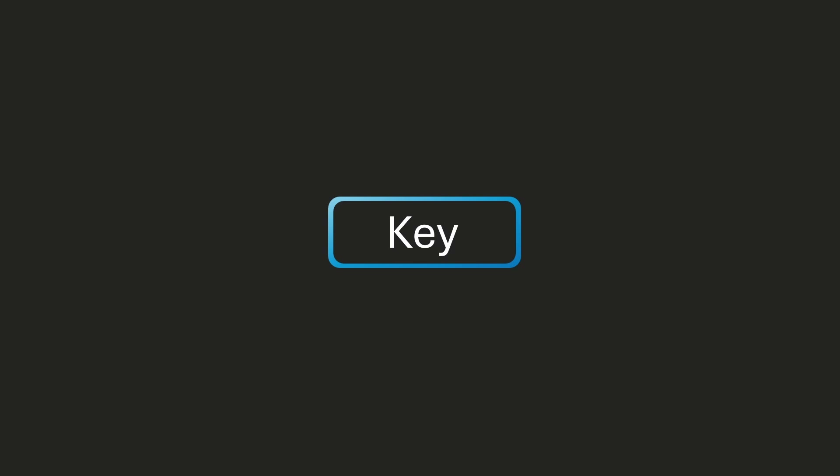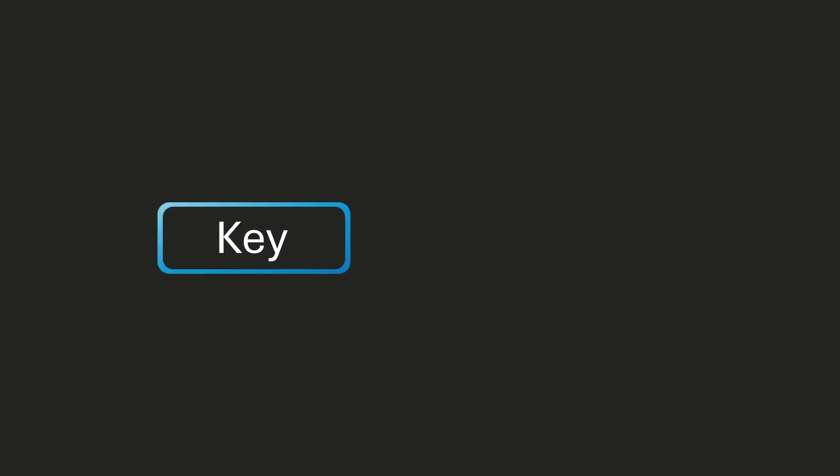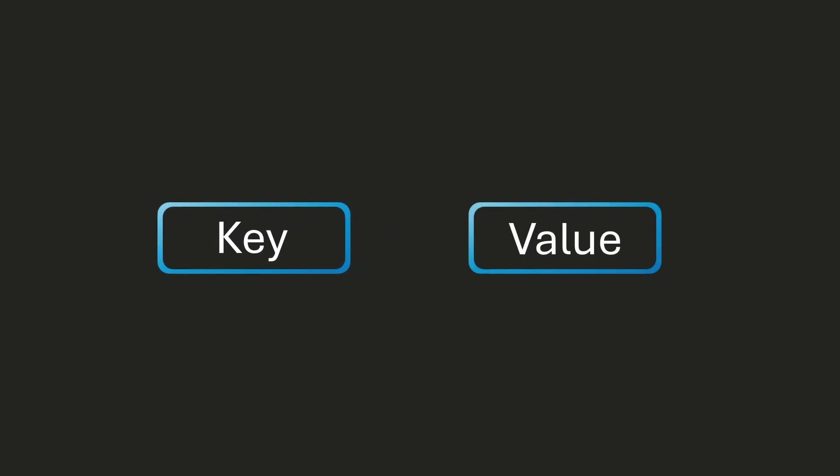A dictionary starts off with a key. A key can be any sort of value — for example it could be a string, a number, a float — and we might have a value associated with that key, and this value could be something like a float, a string, or a number.